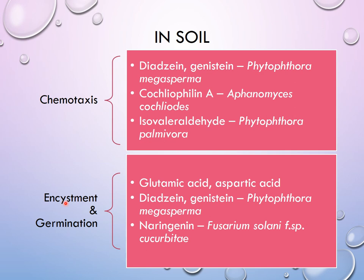Examples of chemotaxis include: daidzein or genistein released by soybean roots attracting zoospores of Phytophthora megasperma; cochleophyllin A released by spinach roots attracting zoospores of Aphanomyces cochlioides; isovaleraldehyde released by cinnamon roots attracting zoospores of Phytophthora palmivora and Phytophthora cinnamomi; and acetosyringone released by tobacco roots attracting Agrobacterium tumefaciens. In all these cases, zoospores or organisms move towards the roots in response to a chemical released by the roots.